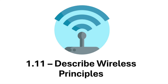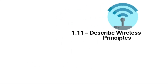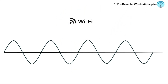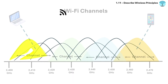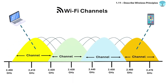Section 1.11 is about wireless principles. Wi-Fi uses radio frequencies to send data. These frequencies are divided into channels, and devices connect using these channels.